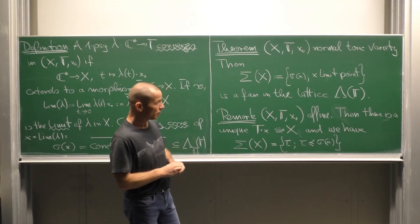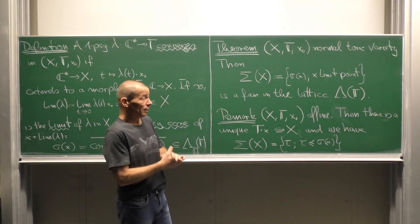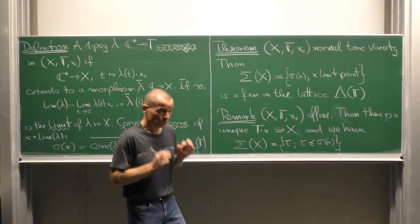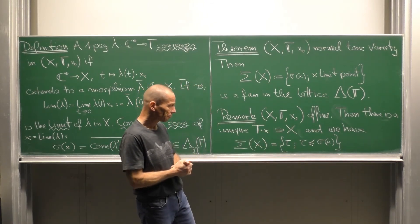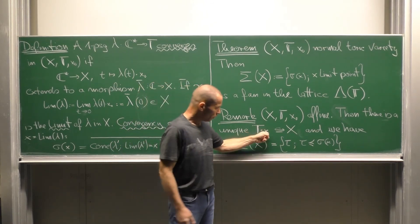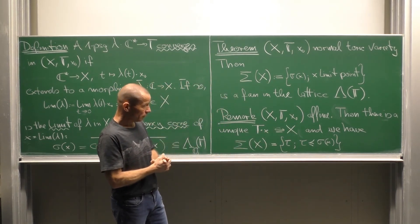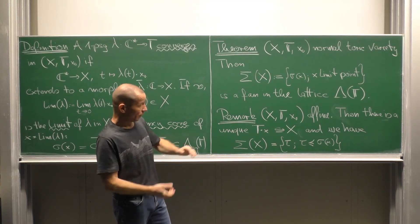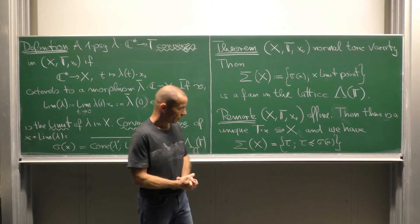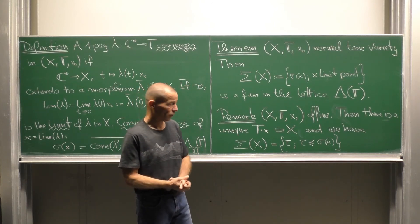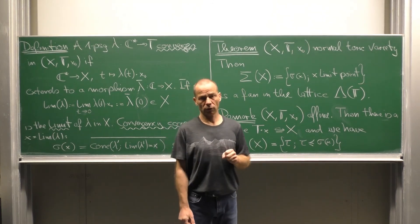One remark. If we have an affine toric variety, then there is always a unique closed torus orbit inside this affine x. And for any point small x of this closed orbit, we can say the following. The fan of convergency cones of the affine toric variety x consists just of the faces of the convergency cone of this point x with a closed orbit.